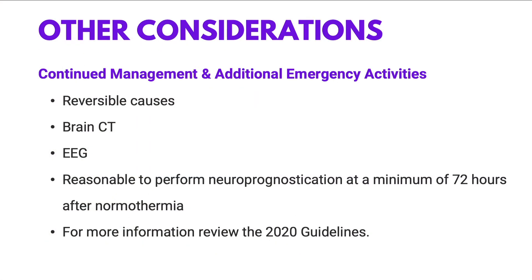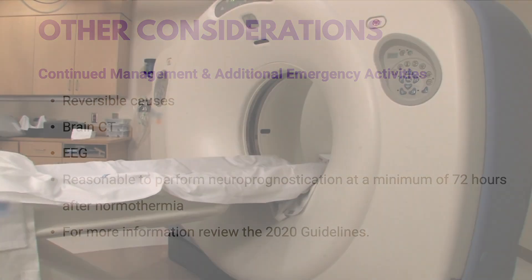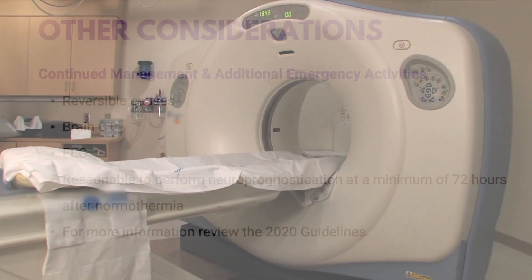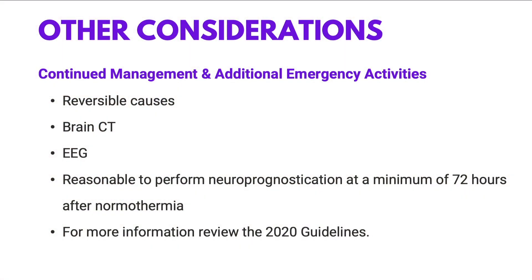Other considerations: don't forget your H's and T's — the reversible causes that persist post-return of spontaneous circulation. We can think about a brain CT or EEG. It's also reasonable to perform neuro-prognostication at a minimum of 72 hours after normothermia.